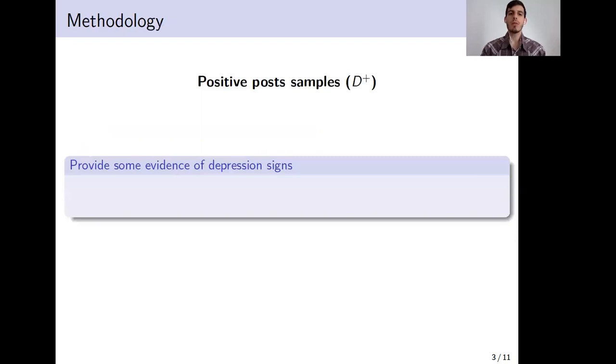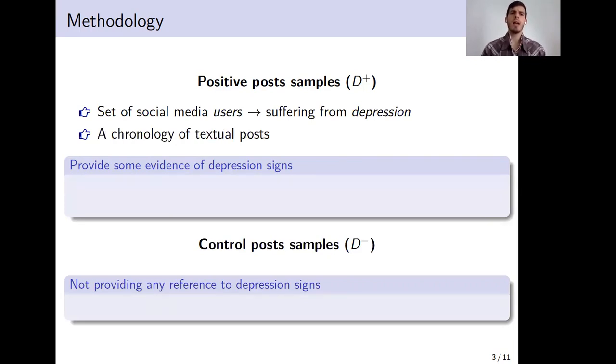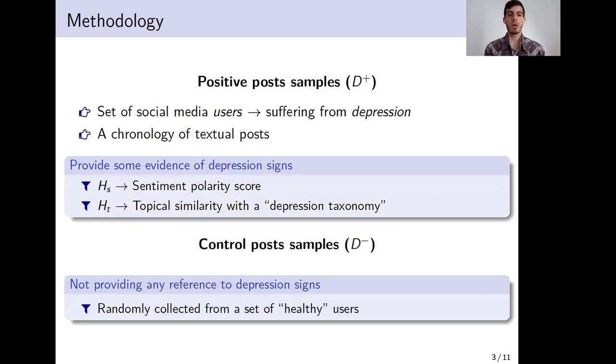Under this scheme, we're going to have two types or two groups of posts: positive post samples, which are those providing some evidence of depression, and controlled post samples, which are those not providing any reference to depression. In the first case, given a set of social media users for which we have definitive knowledge that they are suffering from depression because they have self-declared or because they have completed a standard questionnaire, such as the BDI, and a history of their textual posts, we're going to define two heuristics to automatically select the posts. The first heuristic is going to be based on the sentiment polarity score, while the second one is going to be based on the topical similarity with the depression taxonomy. In the case of the controlled posts, we're going to randomly collect such set from a group of healthy users.